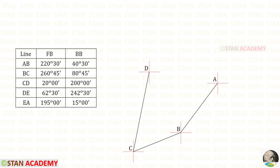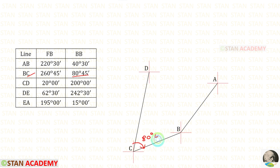We may have doubt whether the line CD goes this way or this way. To clarify this doubt, we have to check the back bearing of BC. The back bearing of BC is given as 80 degrees 45 minutes. The fore bearing of CD is 20 degrees. Since this angle is less than this angle, our assumption is correct.